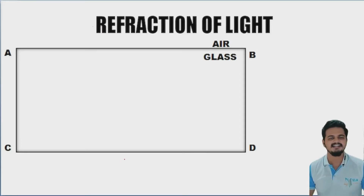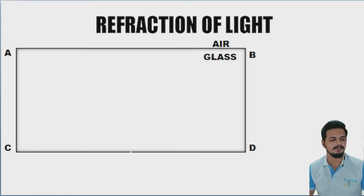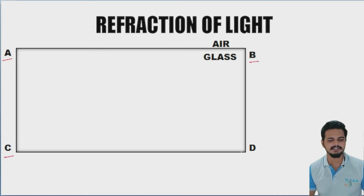To understand refraction further, let's perform an activity. Take a glass slab and place it on a paper. Mark the endpoints of the glass as A, B, C, and D, as shown in the picture. This gives you two media: air and glass.